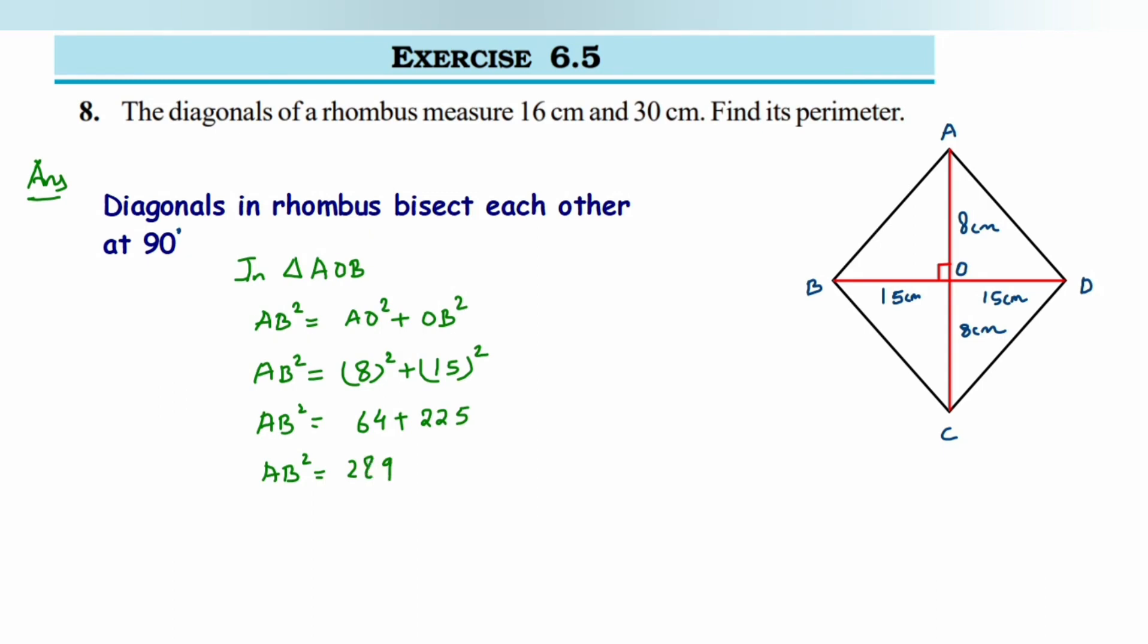Now we'll take the square root of AB. If you don't know what square root is, you just find a number which you multiply 2 times to get 289, so the answer will be 17. Square root of 289 is equal to 17, so we'll get 17 centimeter. In a rhombus all sides are equal, so all four sides measure 17 centimeter.